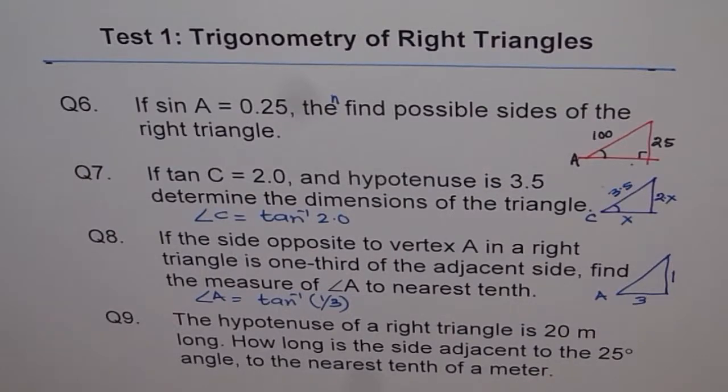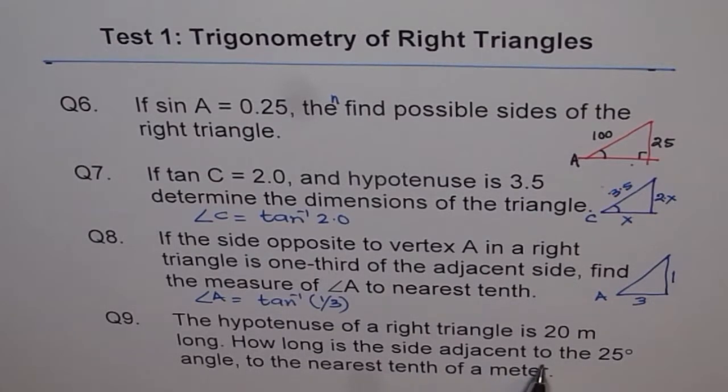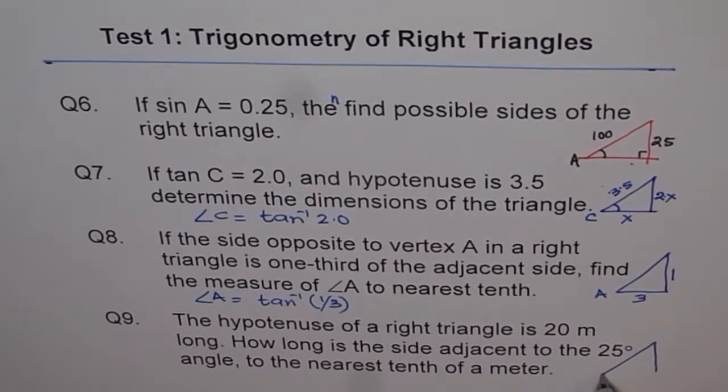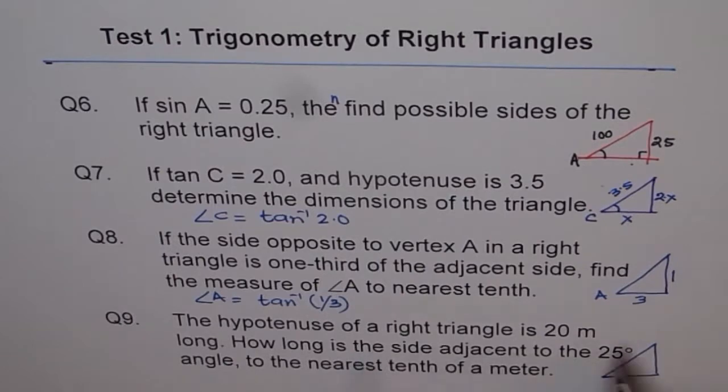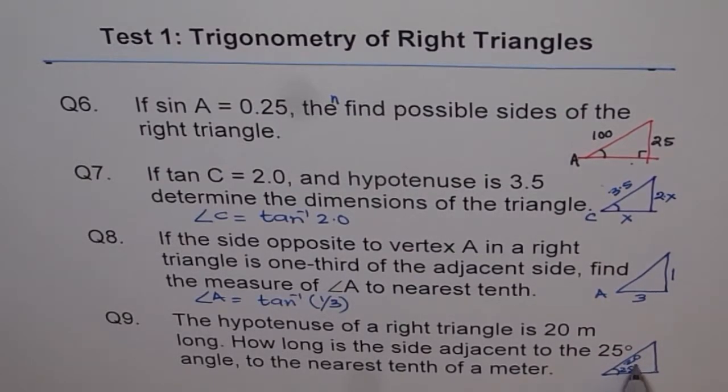Question 9: The hypotenuse of a right triangle is 20 meters long. How long is the side adjacent to 25 degrees angle? That means here we are given a triangle where hypotenuse is 20 meters. How long is the side adjacent to 25 degrees angle? Let's say this is 25 degrees.